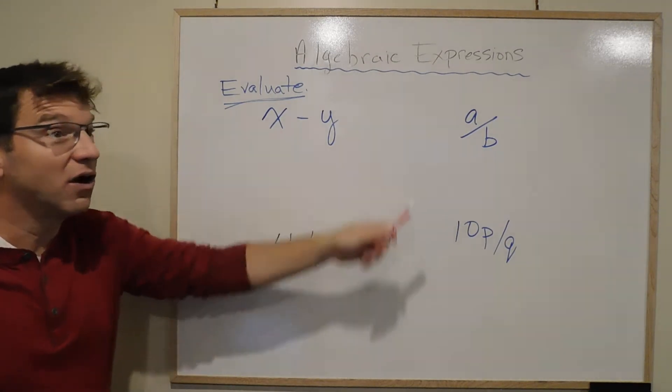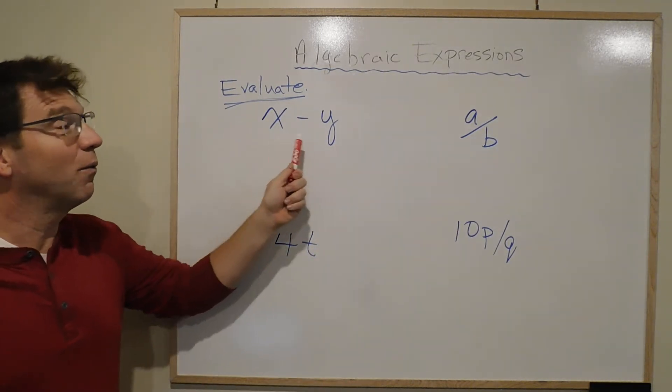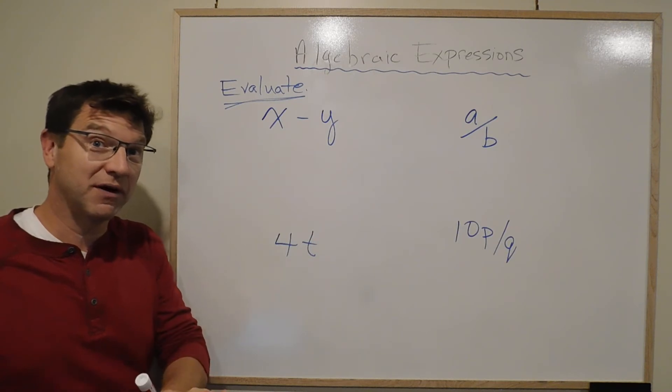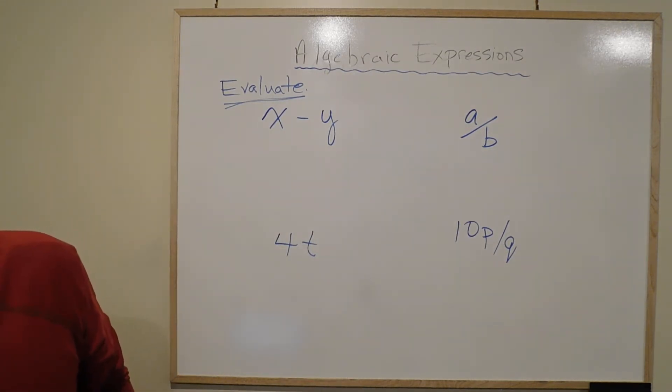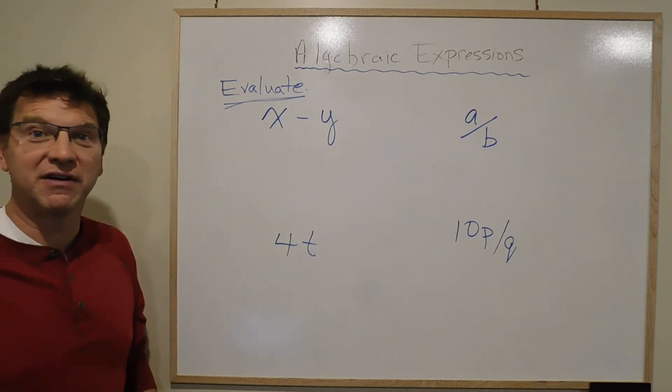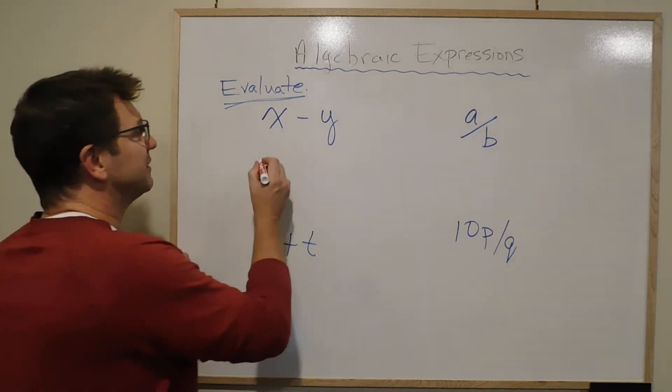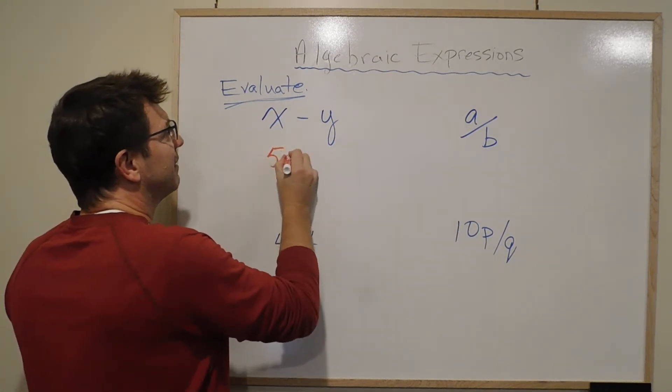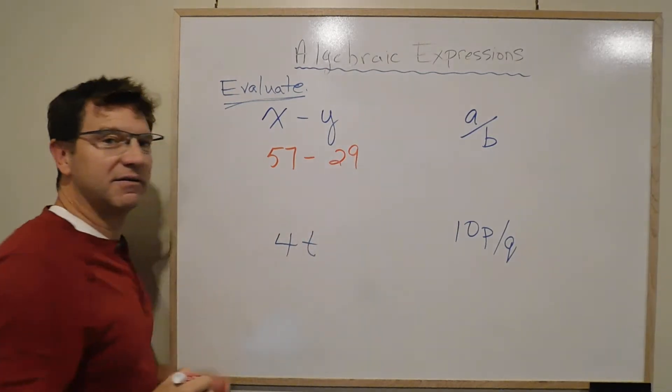So in this case, in all of these cases, in fact, the only way we can evaluate is if we know what numbers to put in for the variables. And you'll see, just looking here, x minus y, so we know that x is 57 and y is 29. So it tells us to put in 57 for x and it tells us to put in 29 for y.